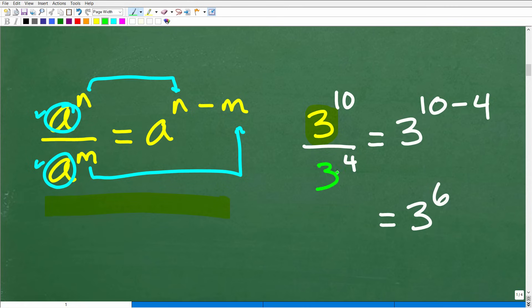So three to the 10th divided by three to the fourth is going to be equal to three. That's what the rule states and then 10 minus four. Remember, it's the numerator exponent first and then the denominator exponent second we're going to take away from. So that's three, 10 minus four, which of course is three to the sixth power.